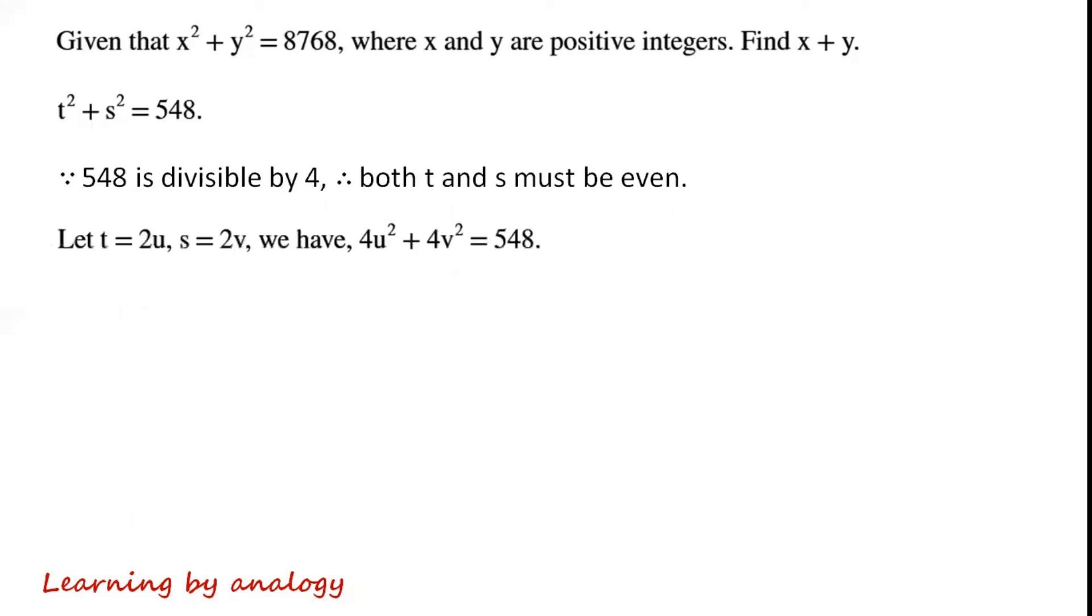Let t equal 2u, s equal 2v, we have 4u squared plus 4v squared equals 548. So the sum of u squared and v squared equals 137.